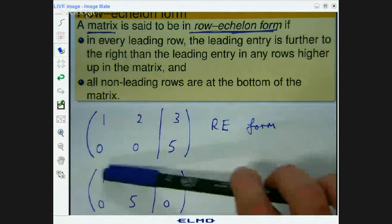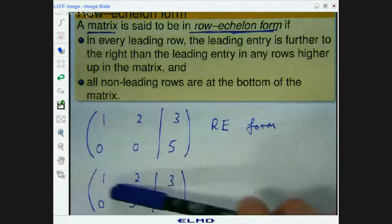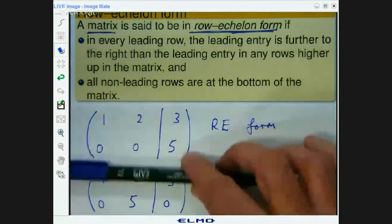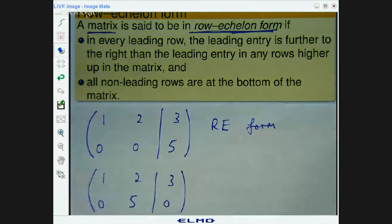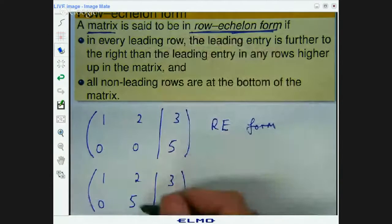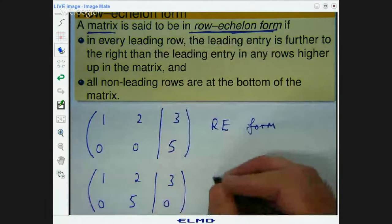Every row is leading because there's no non-zero rows. There's the leading entry of row one. There's a leading entry of row two. Again, we're moving as we go down. We're moving to the right with our first non-zero or leading entries in the rows. So this is in a row echelon form.